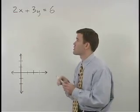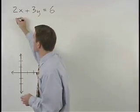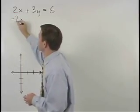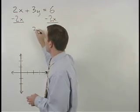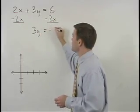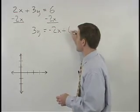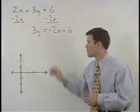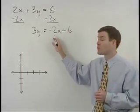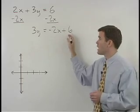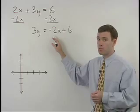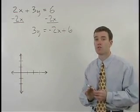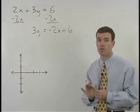And we do that by first subtracting 2x from both sides to get 3y equals negative 2x plus 6. Notice that I put the x term first on the right side of the equation and then the number, because in y equals mx plus b form, the x term comes first on the right side of the equation.